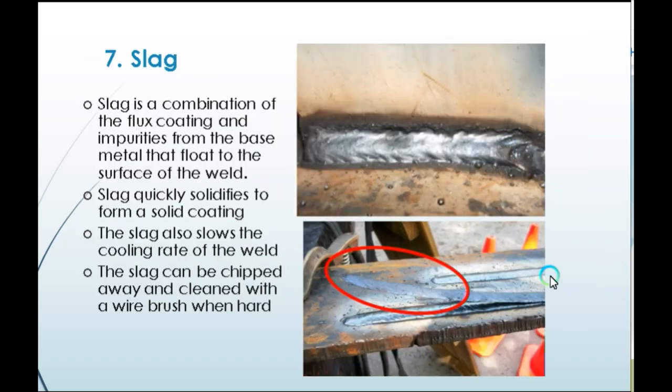Slag is a combination of the flux coating and impurities from the base metal that float to the surface of the weld. Slag quickly solidifies to form a solid coating and also slows the cooling rate of the weld. The slag can be chipped away and cleaned with a wire brush when hard.